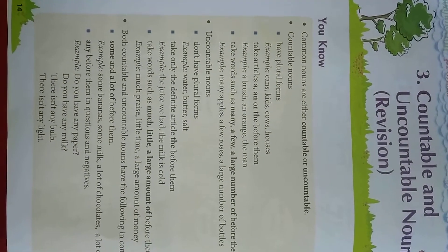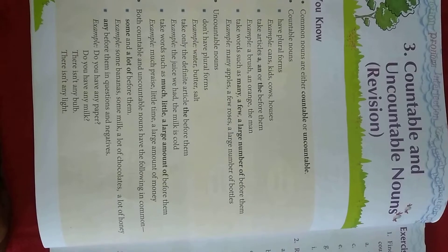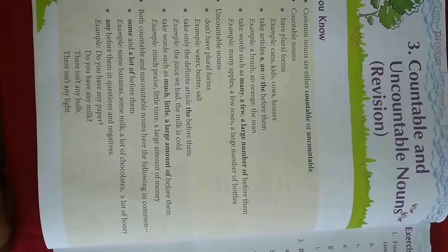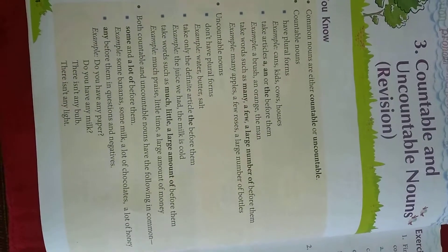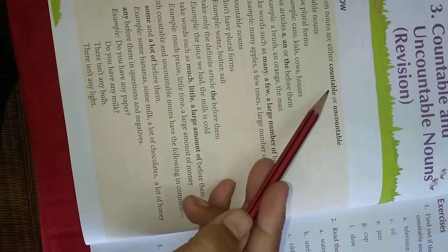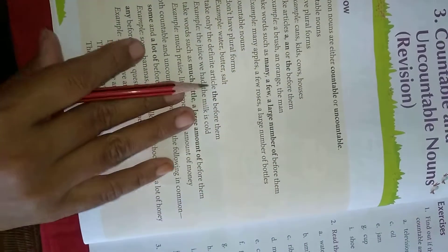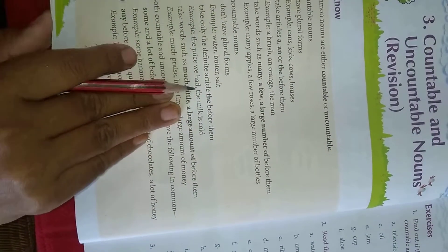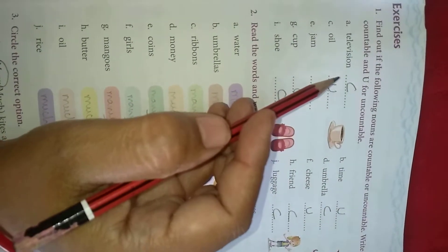Hello students, now we are going to see an exercise in our textbook on countable and uncountable nouns, page number 14. I have already explained what countable and uncountable nouns are. Now we are going to see the exercise on page number 15. All of you take out page number 15 in your textbook.